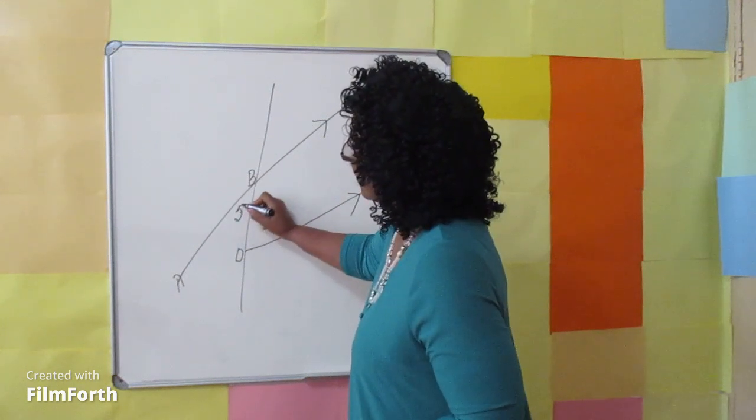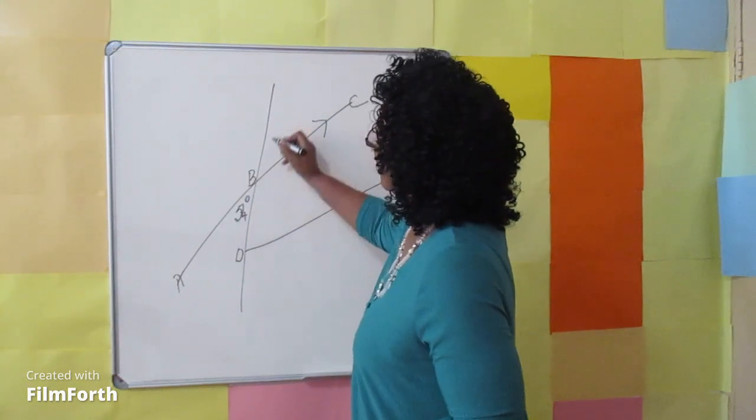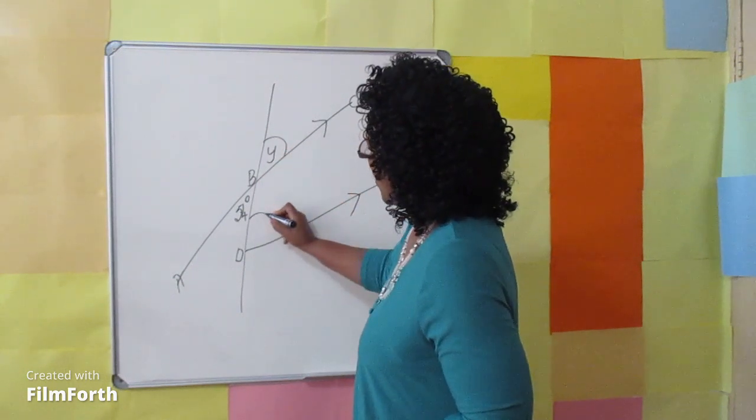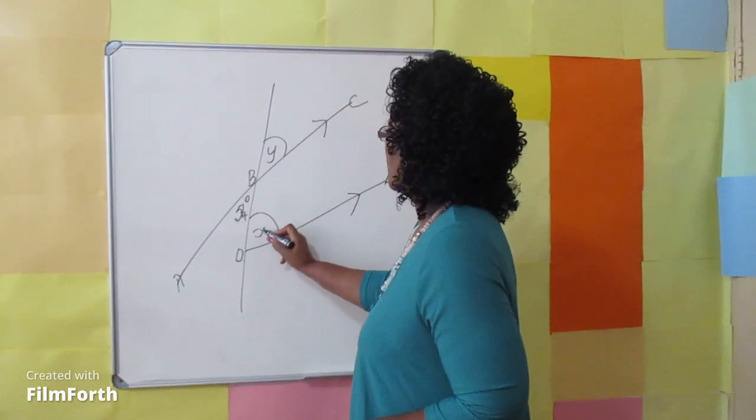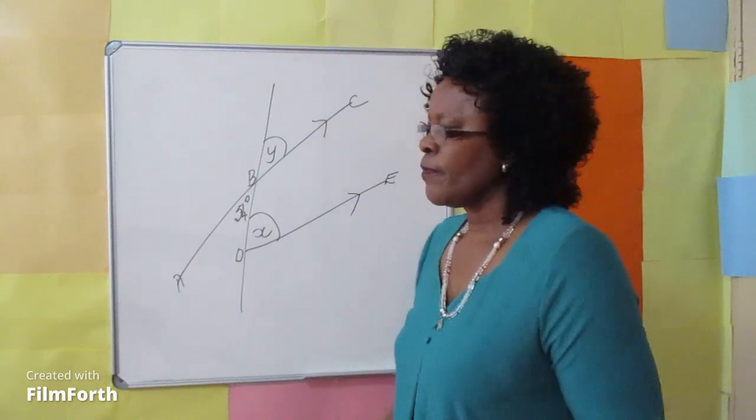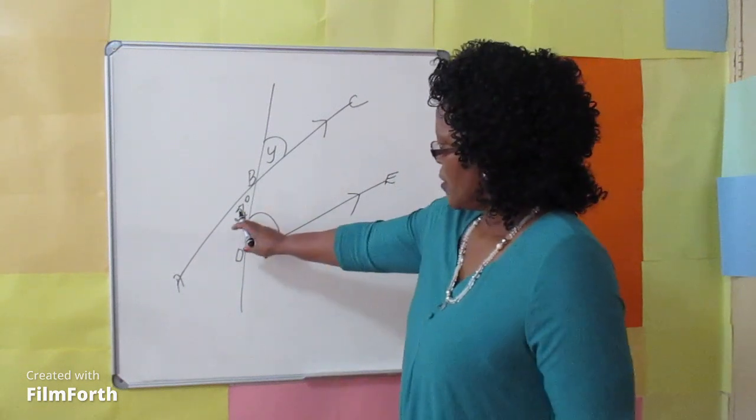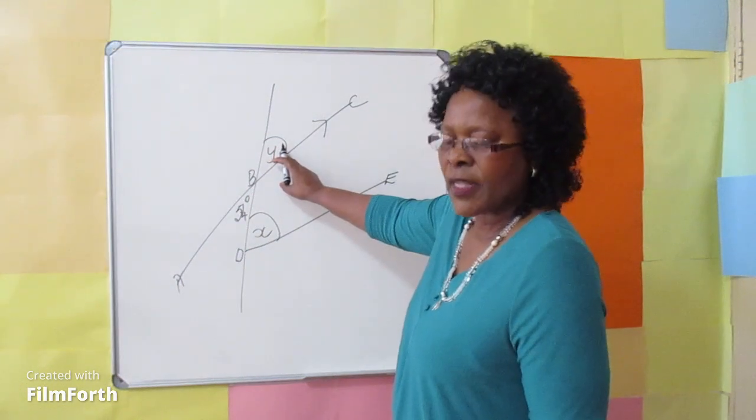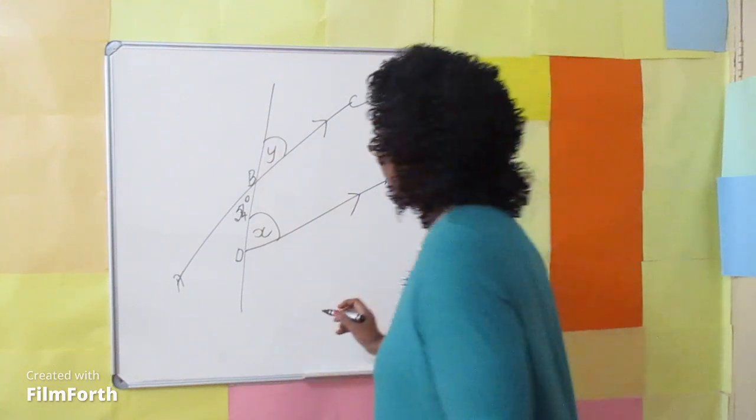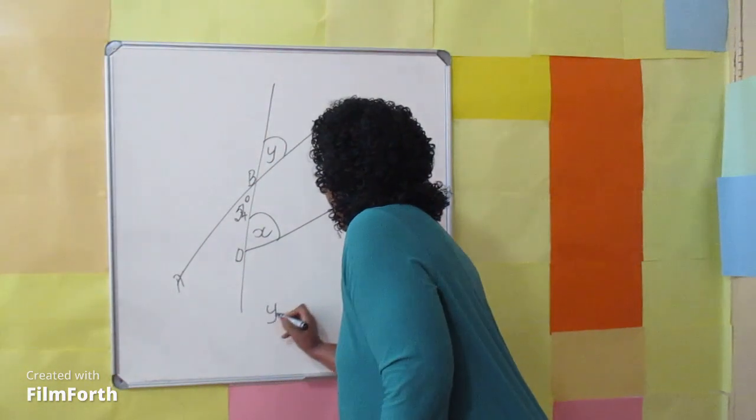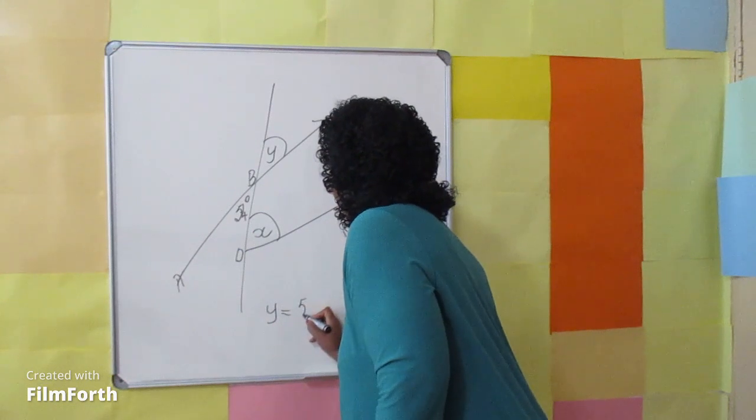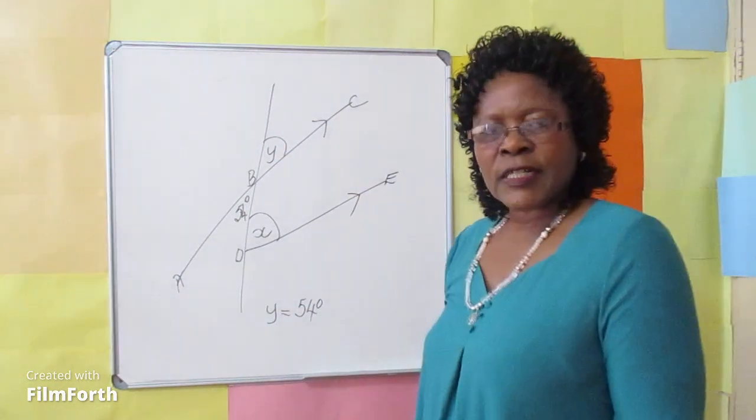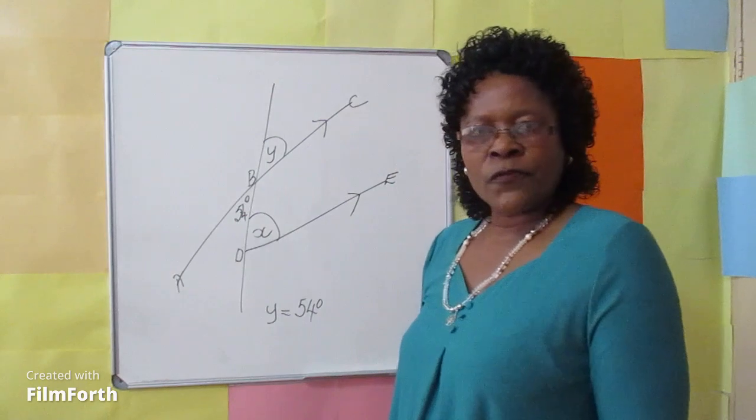This 54 degrees angle is vertically opposite to angle Y. And angle Y is corresponding to angle X. Therefore, if 54 degrees is vertically opposite to Y angle, Y angle is also 54 degrees. Y is equal to 54 degrees. If Y is 54 degrees, X is 54 degrees.